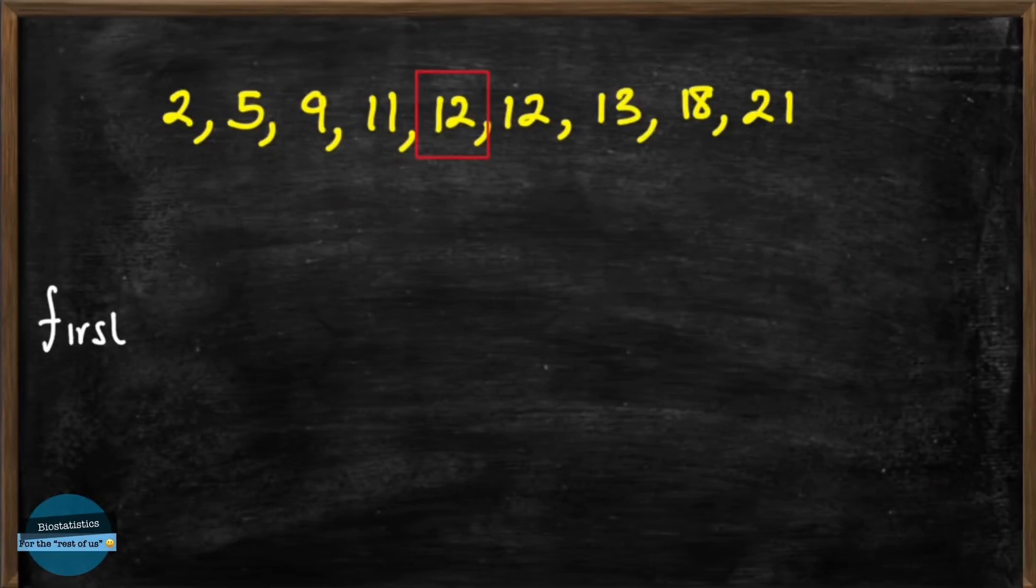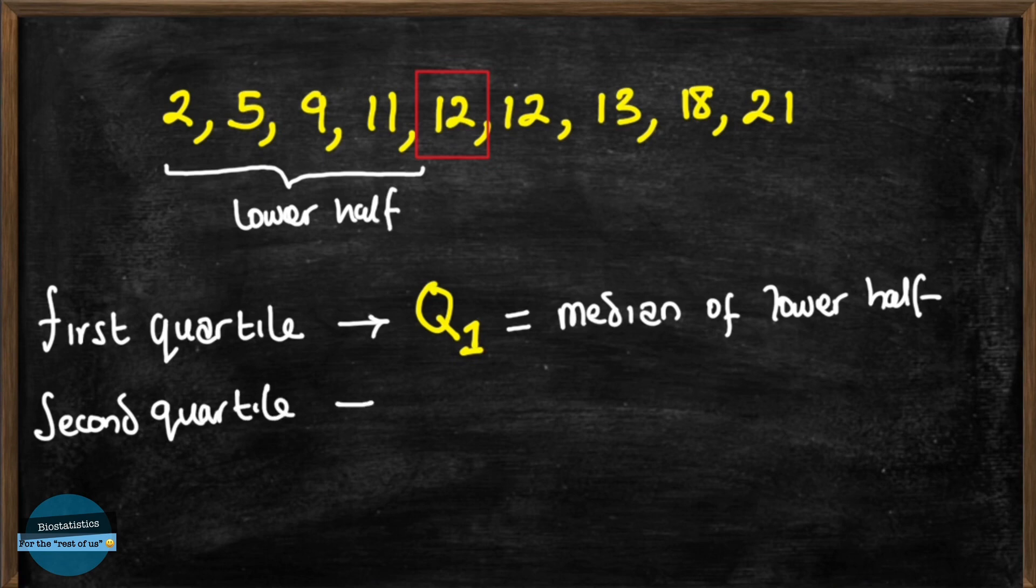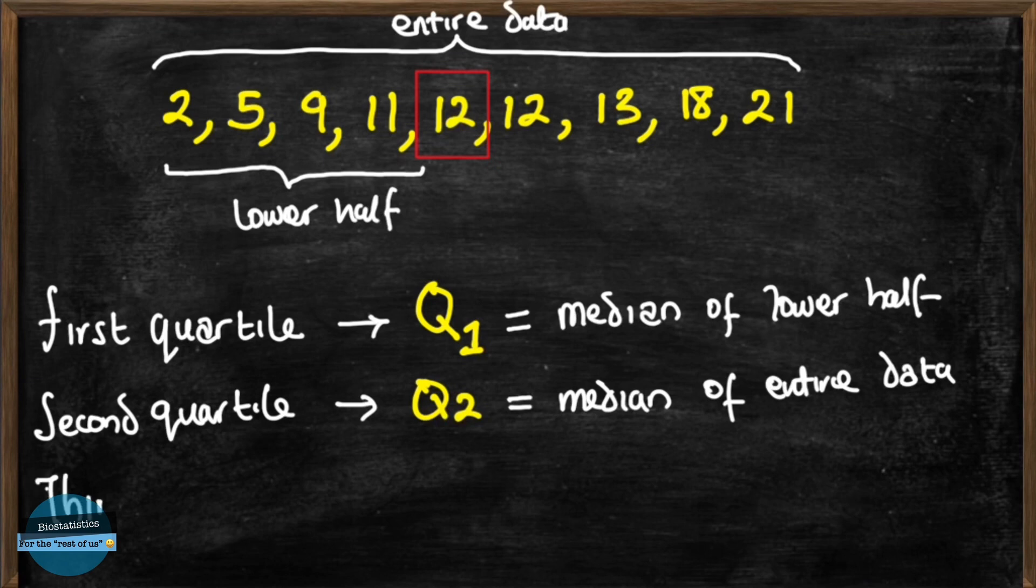The first quartile is termed Q1 and this is obtained by finding the median of the lower half of the data. While the second quartile, denoted as Q2, is the median of the whole data set. And the third quartile, Q3, is the median of the upper half of the data.